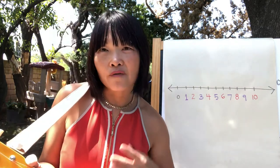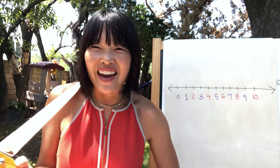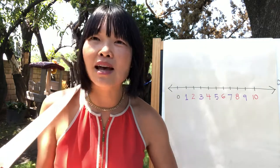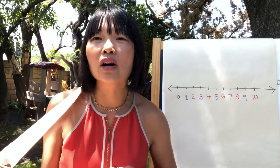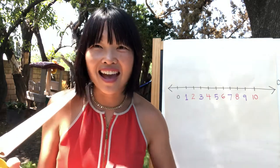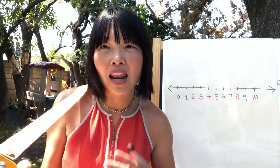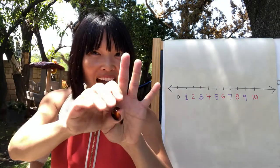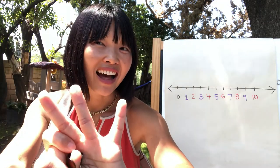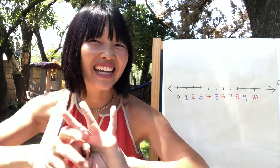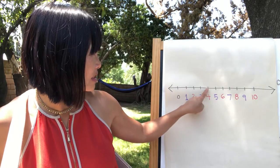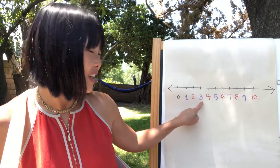There were four in the bed and the little ones said, roll over, roll over. So they all rolled over and one fell out. Four, one falls out — how many is left? Three. Four, one falls out — three.